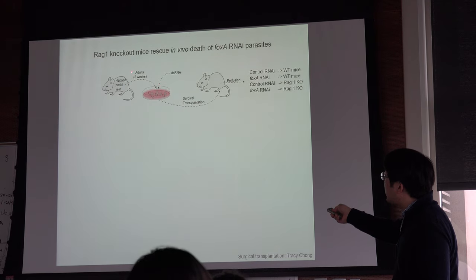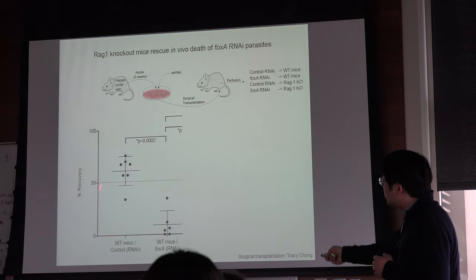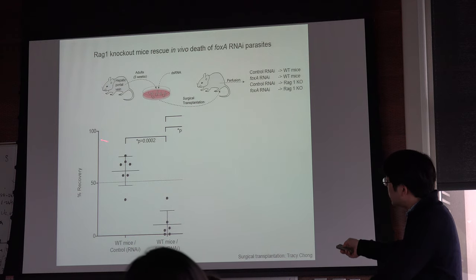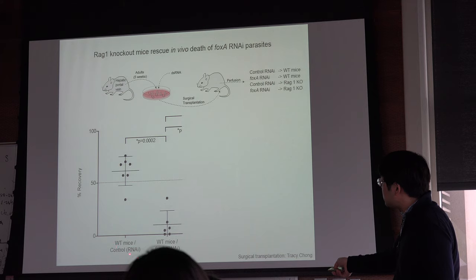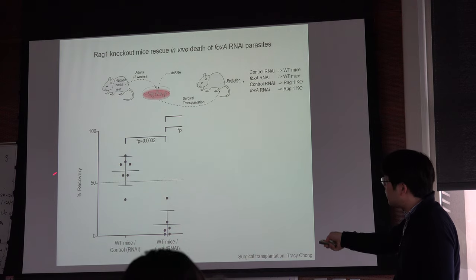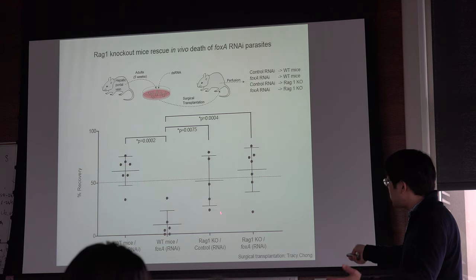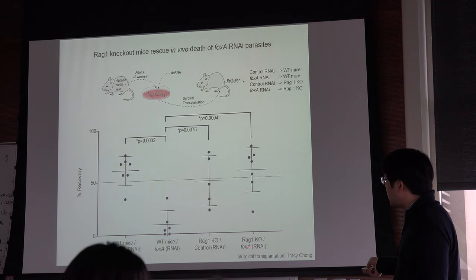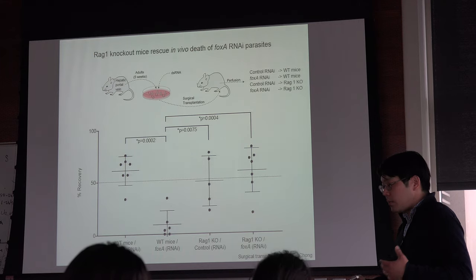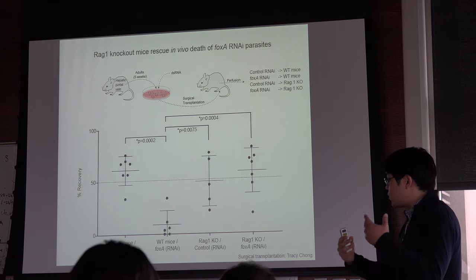We can knock FOXA down to get rid of the esophageal gland and transplant those parasites into wild-type mice and RAG1 knockout mice. We see the significant reduction in percent recovery in wild-type mice receiving FOXA RNAi parasites. In the immunodeficient RAG1 knockout mice, however, the FOXA RNAi parasites show a recovery rate similar to control parasites. This really suggests that the parasite deaths caused by lack of the esophageal gland are being rescued in RAG1 knockout mice, which lack the adaptive immune system.